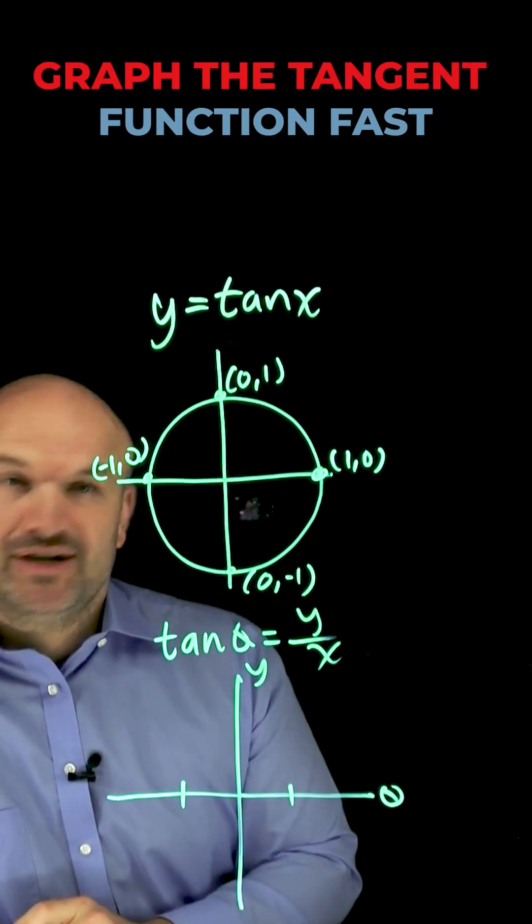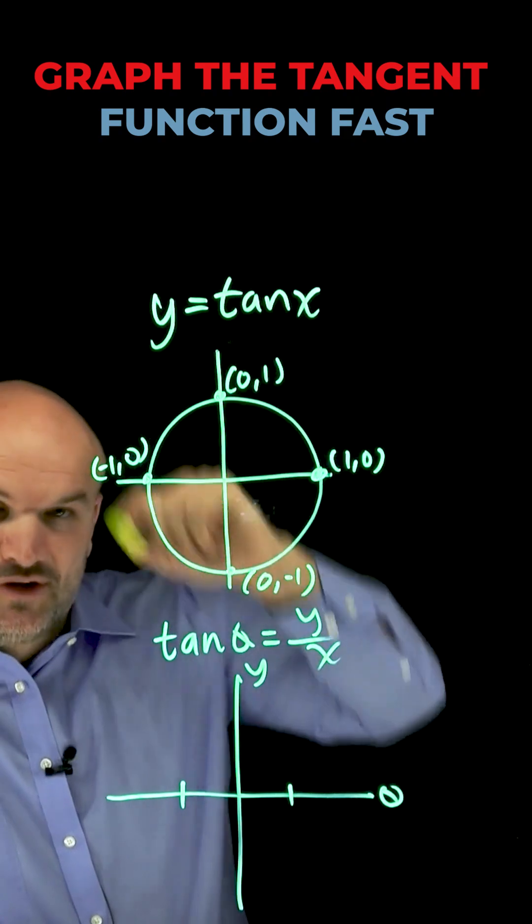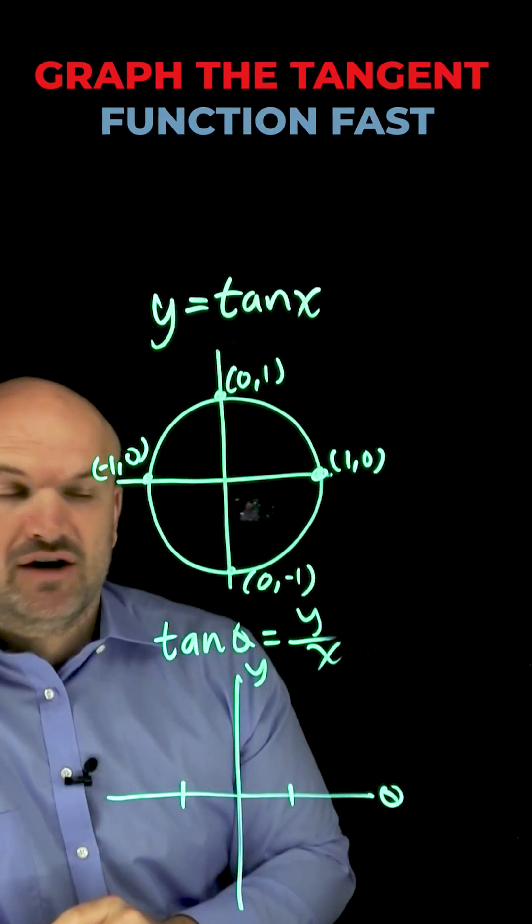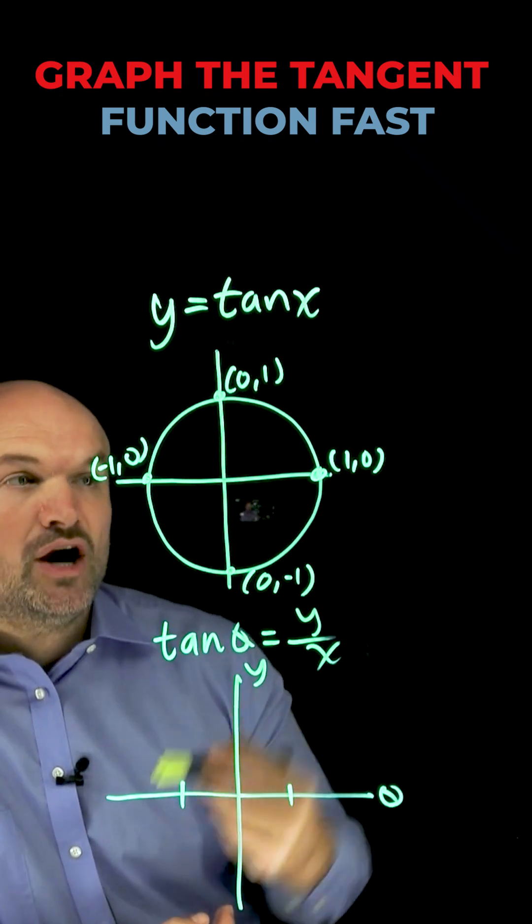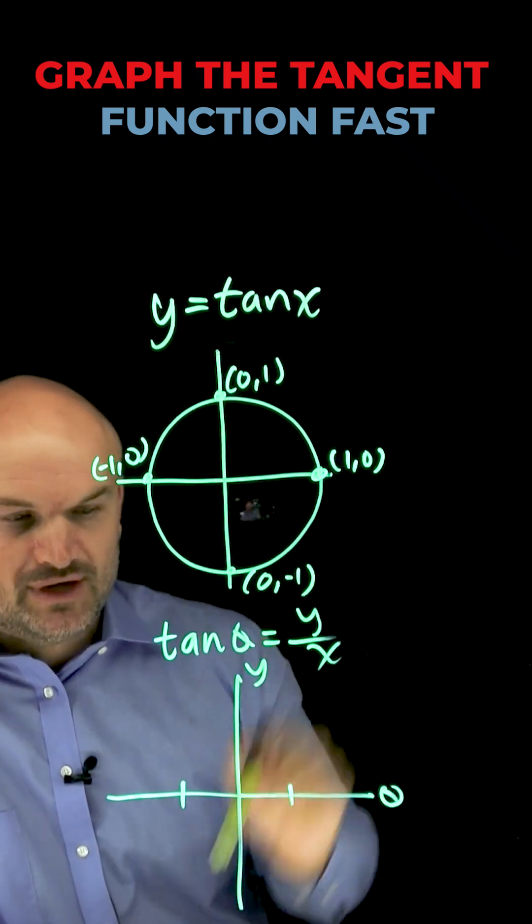Let me show you how to graph the initial period of your tangent function fast. Two things you need to know: one, these four points that lie on the unit circle, and two, our definition of tangent for an angle in regard to points on the unit circle, which is the relationship of y over x.